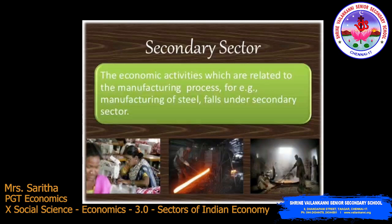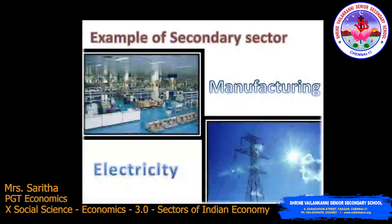The secondary sector covers activities in which natural products are changed into another form through manufacturing. It is the next step after the primary sector. For example, using cotton fiber from the plant, we spin it into yarn and weave cloth. Similarly, sugarcane as a raw material is used to make sugar or jaggery. The secondary sector is also called the industrial sector.